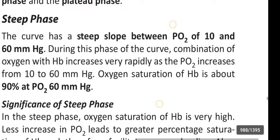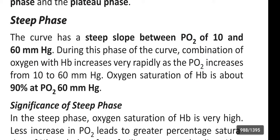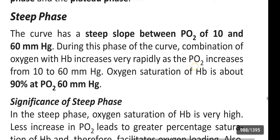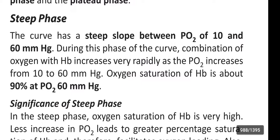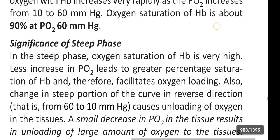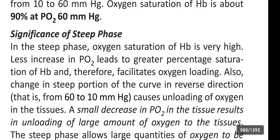Steep phase: the curve has a steep slope between partial pressure of oxygen of 10 and 60 mmHg. During this phase, combination of oxygen with hemoglobin increases very rapidly as partial pressure of oxygen increases from 10 to 60 mmHg. Oxygen saturation of hemoglobin is about 90% at partial pressure of oxygen of 60 mmHg. In the steep phase, less increase in partial pressure of oxygen leads to greater percentage saturation of hemoglobin, and therefore facilitates oxygen loading.